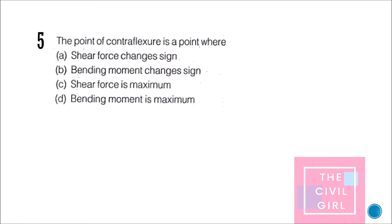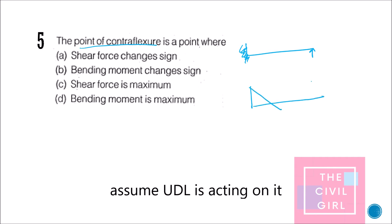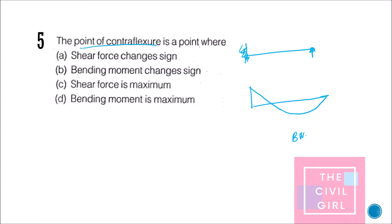Next question: the point of contraflexure is a point where what? Consider a propped cantilever beam — the fixed end has a moment, the hinged end does not. The bending moment diagram crosses zero at one point, and that point is the point of contraflexure. So the point of contraflexure is where the bending moment changes its sign — not the shear force. That is the correct answer.